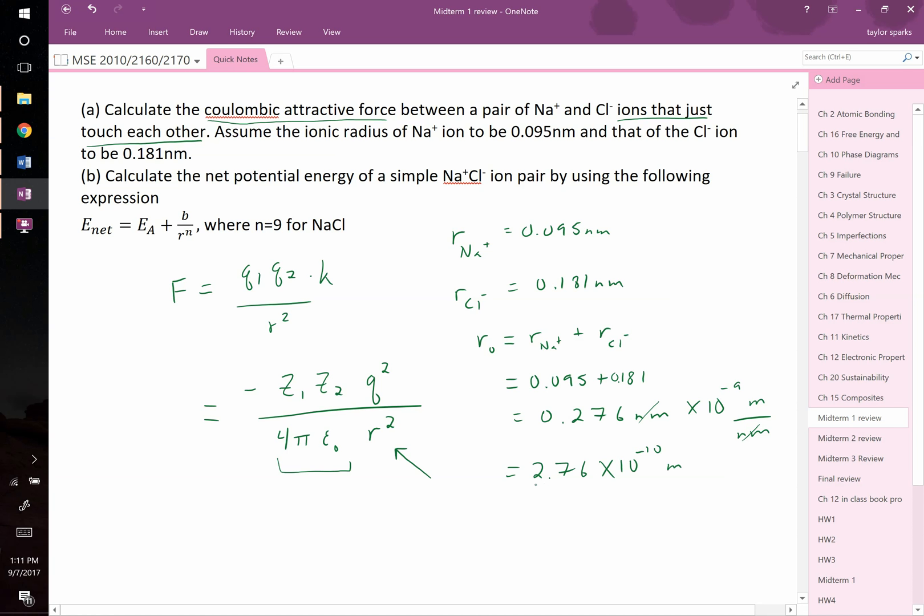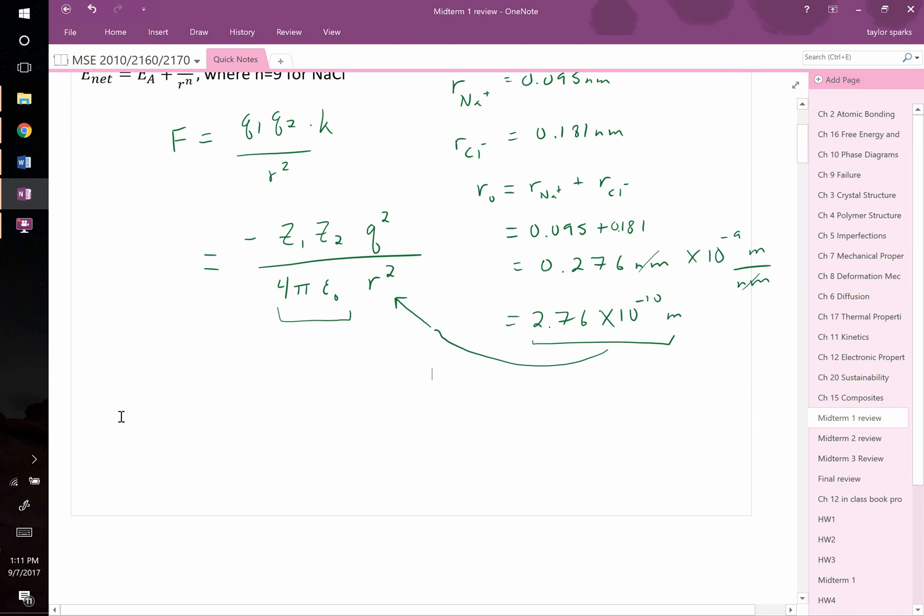So now we know R, this value here, we can plug it in and we can solve for our attractive force. So let's do so. The force attractive is going to be equal to negative, the first charge of the first ion is positive 1. The charge of our second ion, our anion, is negative 1. These are both times the charge of an electron. The fundamental charge of an electron is 1.60 times 10 to the negative 19 coulombs. That's squared.